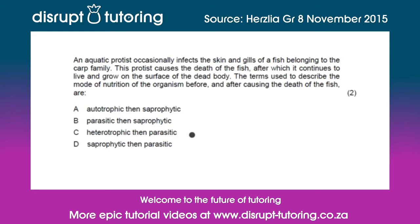Before we choose one of these answers, let's make sure we remember the meaning of each term. Autotrophic means feeding on itself. Saprophytic means feeding on dead tissue. Parasitic means infecting an organism and usually causing a disease. And heterotrophic means feeding on food produced by a producer.